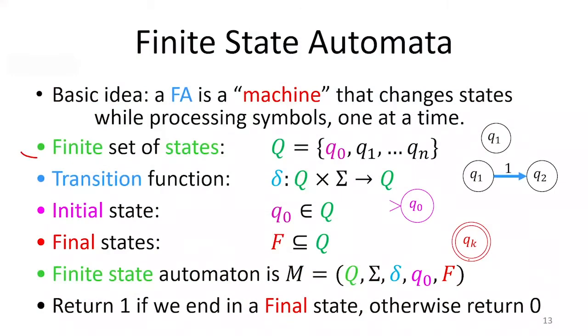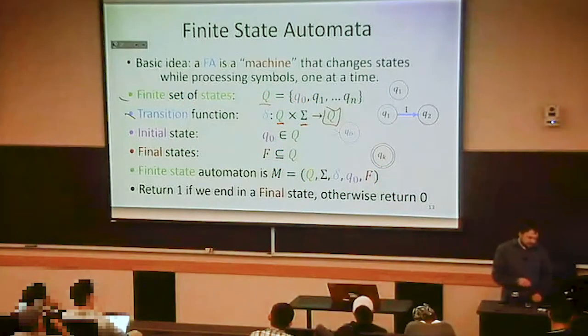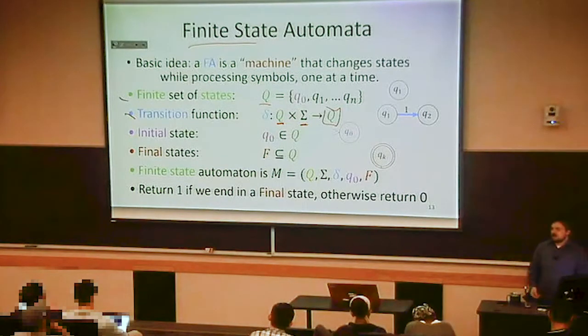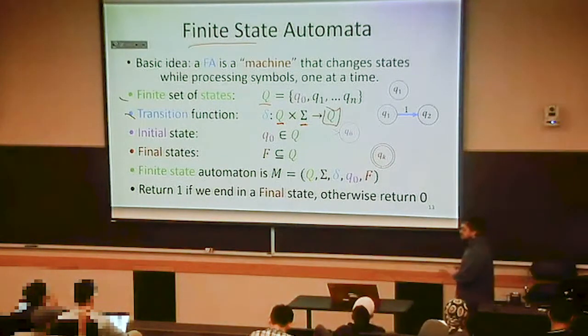We have a finite set of states that we call Q. We have some sort of transition function that takes as input a pair of a state and a character from the alphabet and produces some state as output. The domain of this transition function is Q cross sigma, so that is the states cross the alphabet, and then the output is a state. In this case, there are a finite number of states, this being a finite state automaton. Our alphabet is also always going to be finite.